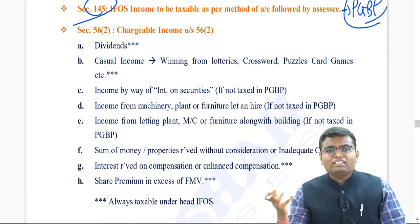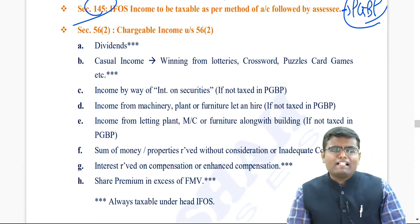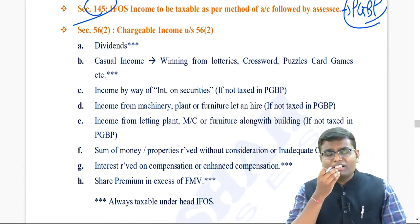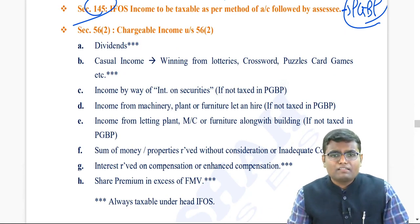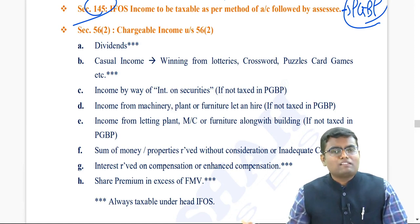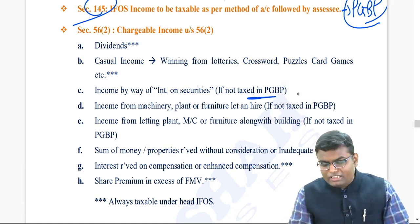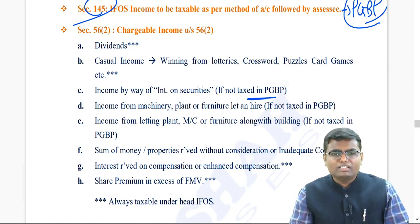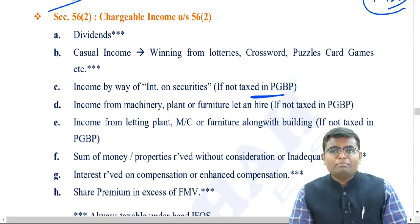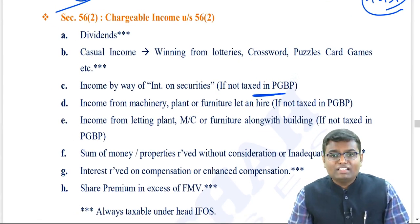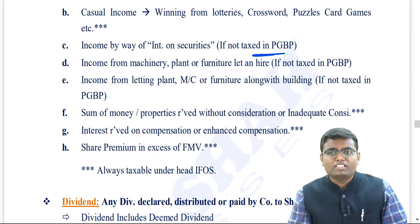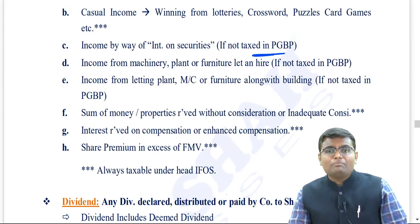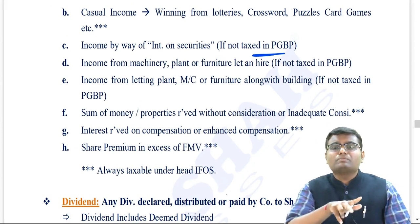Let us see an overview of which are the common incomes taxable under IFOS. First of all, dividend, then casual income - winning from lottery, crossword puzzles, card game, other games. Income from interest on securities if it is not taxable in PGBP, then it will be taxable here. Income from machinery, plant or furniture let on hire, if it is not your business, will be taxable here.